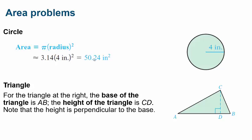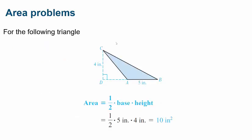For a triangle, the base is one side — here it's side AB — and the height CD is the perpendicular distance from the base to the opposite vertex. The height always forms a right angle with the base. The area of a triangle is one-half times base times height. For this triangle, the base AB is 5 inches and the height is 4 inches, so the area is one-half times 5 times 4.